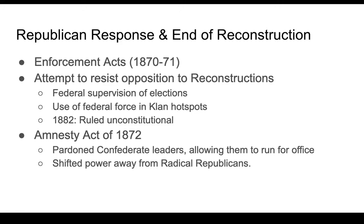In response to the KKK in the early 1870s, the Radical Republicans in Congress during the Congressional Reconstruction era passed the Enforcement Acts to enforce the 14th and 15th Amendments, which protect the right of African Americans to vote and the right to certain privileges that all citizens should have. They sent down supervisors to supervise elections to make sure African Americans had the opportunity to vote, and they used federal force in Klan hotspots, sending soldiers to make sure the Klan was not terrorizing African Americans.